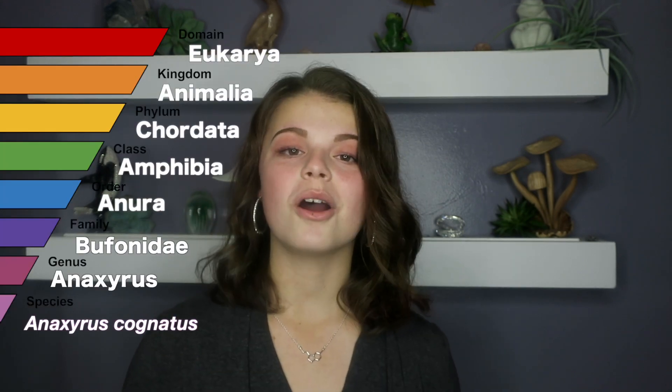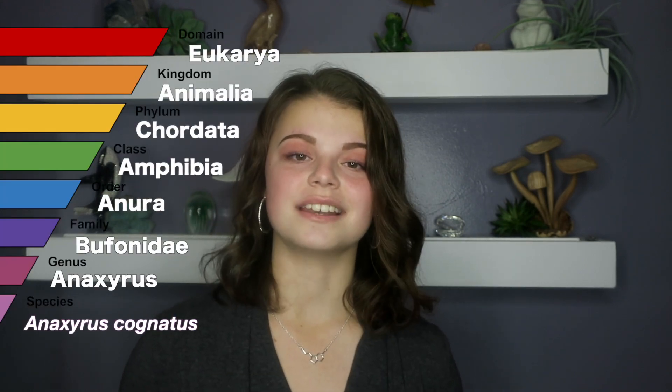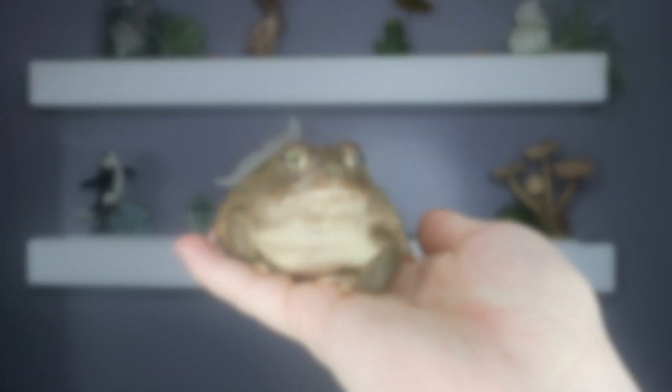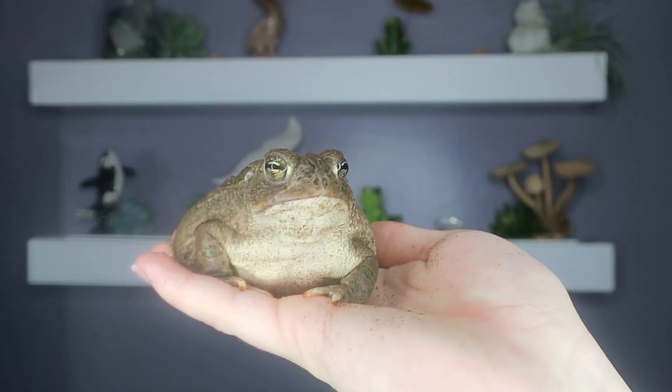Using this system, our toad friend is Anaxorus cognatus. Cognatus is the specific word given to the species Great Plains toads. Now not only do you know the difference between frogs and toads, but you can impress your friends by knowing how all species are categorized, including you.